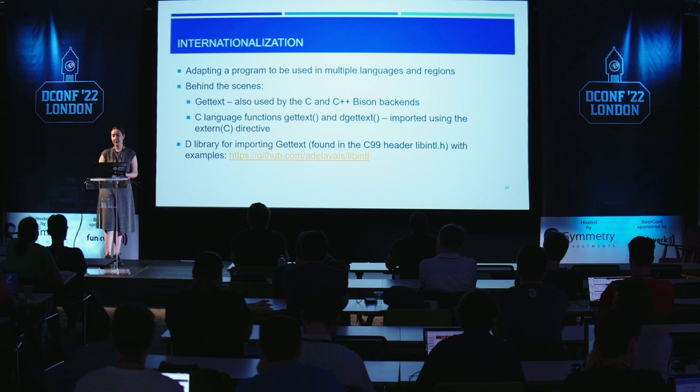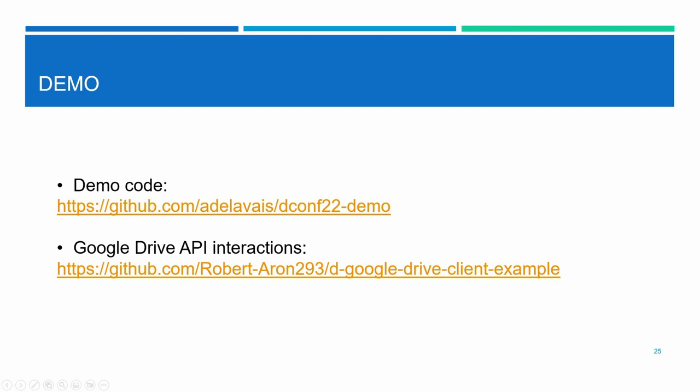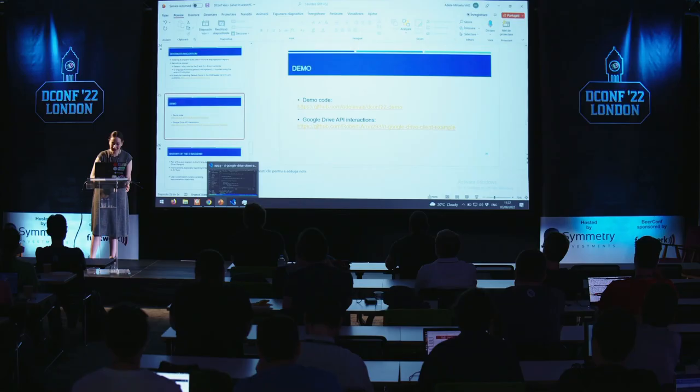I found it difficult to import gettext into a project, so I created a D library you can use with dub to import gettext, which also includes examples on how to use translation catalogs. I have a demo using the earlier Google Drive example, with the Google Drive code written by my colleague Robert Taron, who also participated in Symmetry Autumn of Code 2020.